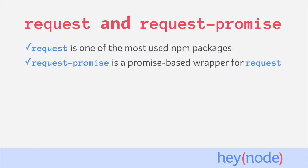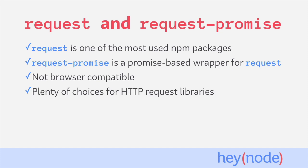Request is a dependency of Request Promise, so you need to install both of them in order to use Request Promise. An important point to remember is that Request and Request Promise are only compatible with Node.js. That means that you can't use these libraries in the browser and in your frontends.